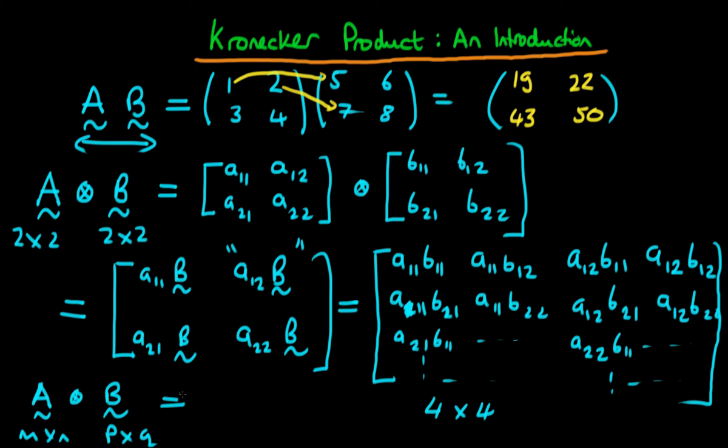It's easy to see that because we're taking each of the components of A and multiplying it by the entire matrix B, so it's unsurprising that the corresponding rows multiply and the corresponding columns multiply as well.